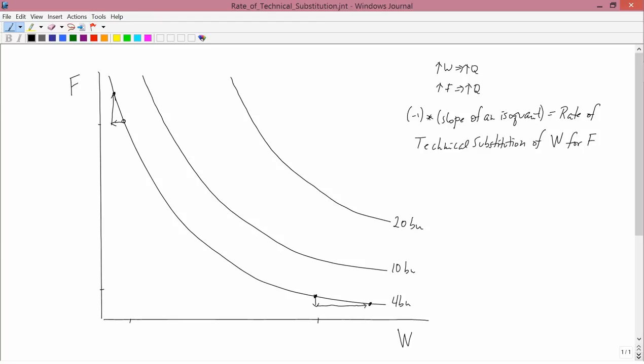The abbreviation we're going to use is RTS of W for F. And sometimes I don't write of W for F, I just write RTS. So that's the rate of technical substitution. Pretty clearly it's analogous to the marginal rate of substitution in consumer theory.